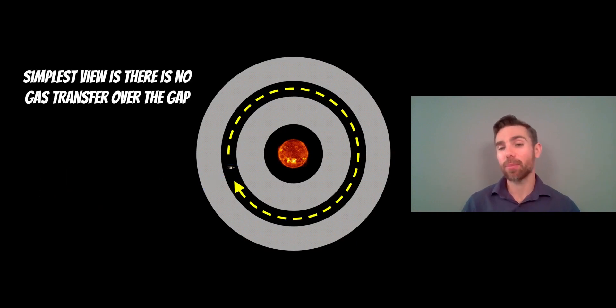The simplest view of this particular process is that there's no gas transfer across the gap. So gas in the outer part of the disk can't just move over to the inner part of the disk over the gap. It's not quite as simple as that in reality because the planets can still grow but it helps us understand how a planet is going to migrate in the disk by assuming that is the case.